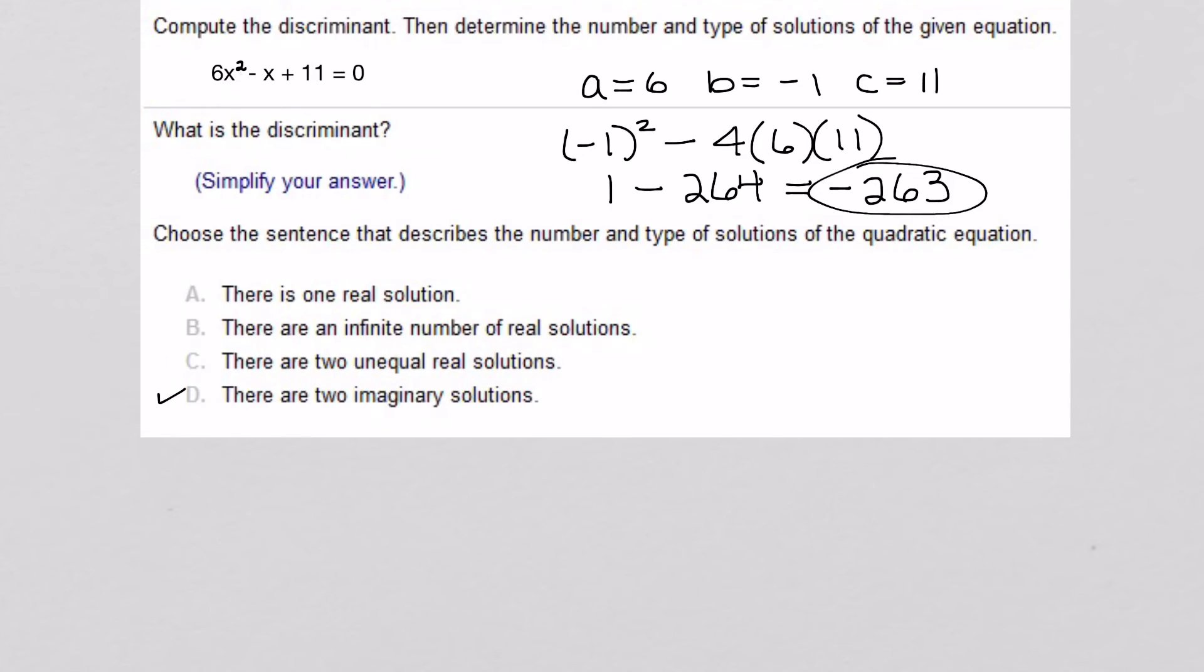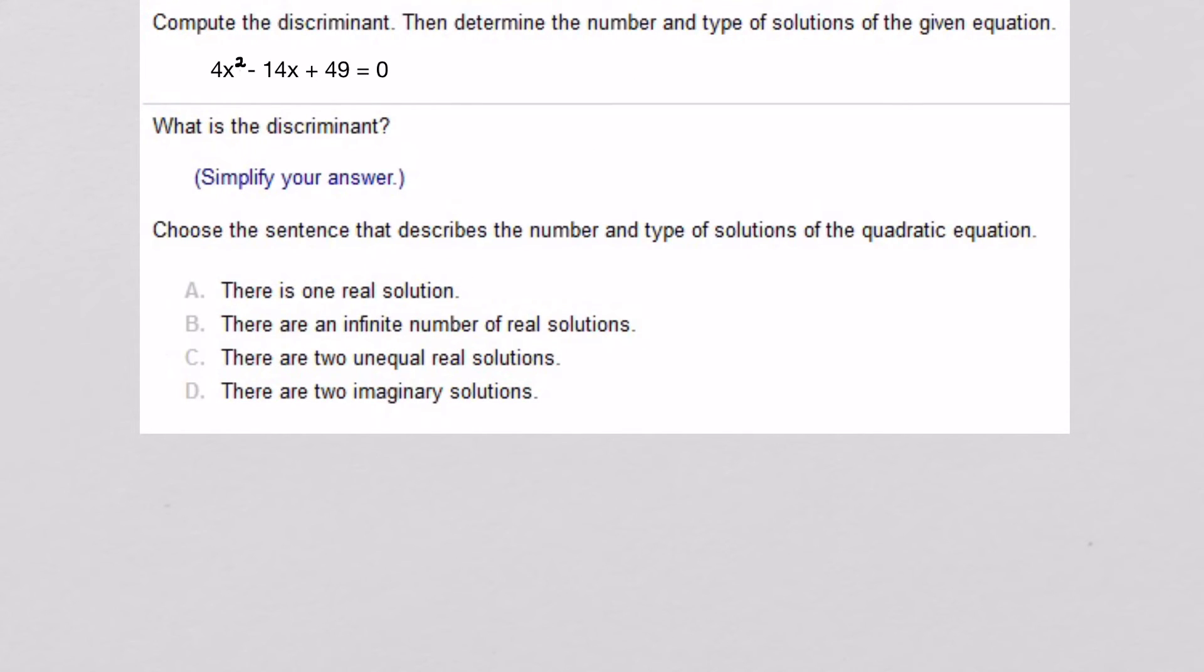All right, let's take a look at one more. And in this one, we have A equals 4, B equals negative 14, and C equals 49. So, B squared, negative 14 squared minus 4 times A times C, and let's see. What does this turn into?